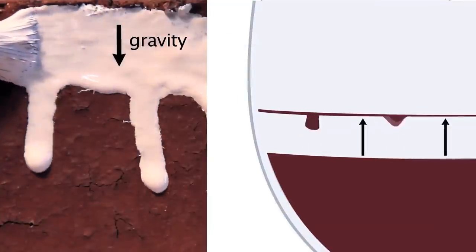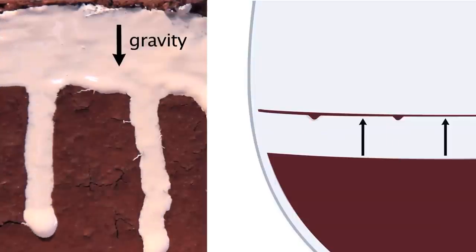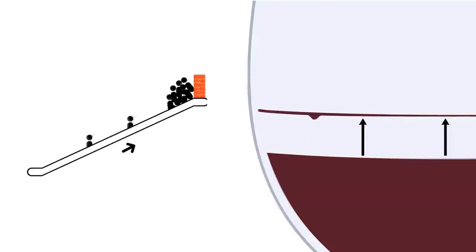But unlike the drops of paint, which only fall once, the wine is continuously pulled back up, so the drops form over and over and over again.